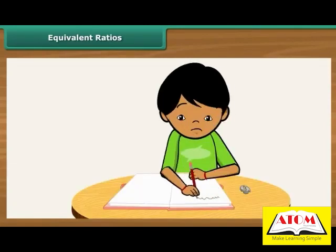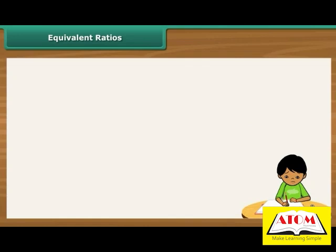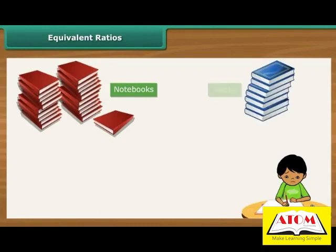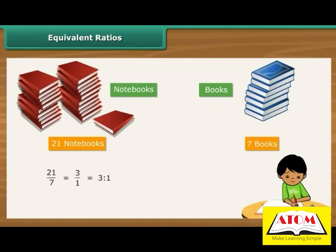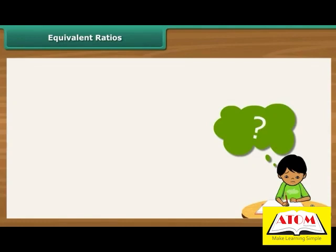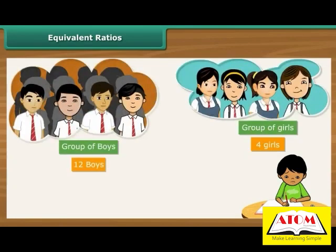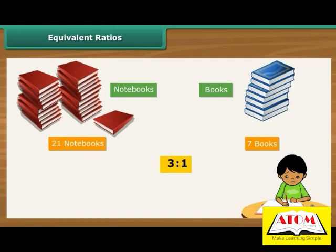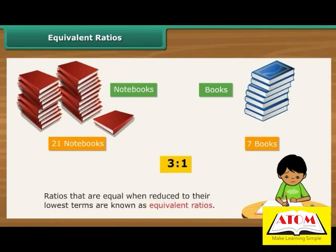Equivalent ratios: Ritesh is learning to calculate ratios and is enjoying it, but there is one thing confusing him. He first calculated the ratio of boys to girls in his class as 3 is to 1. He then calculated the ratio of notebooks to books in his bag, which also works out to be 3 is to 1. Ritesh wonders: can two ratios be the same? Yes, they can. Ratios that are equal when reduced to their lowest terms are known as equivalent ratios.